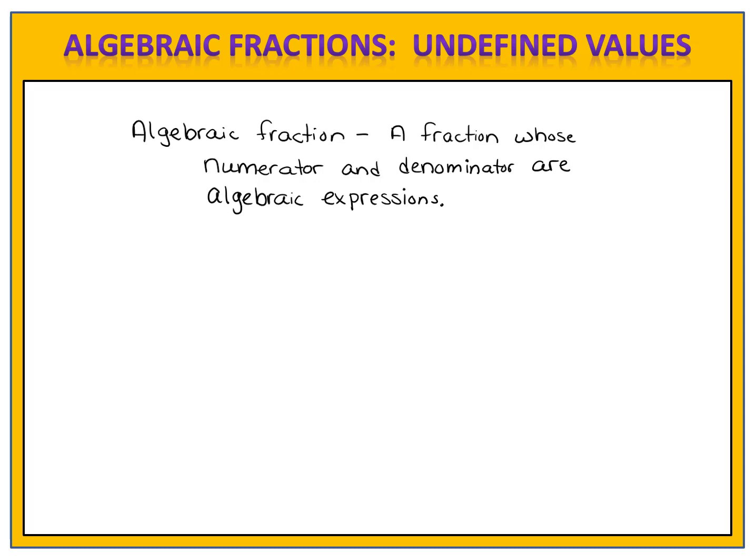What does that mean? Let's look at a few examples. Here's an algebraic fraction: 3x plus 5 divided by x minus 2. Notice that we have algebraic expressions — expressions involving variables — in the numerator and the denominator. Here's another example: 7 divided by x squared plus 2x minus 63. Notice that the denominator is a polynomial. One more example: 3 divided by x — certainly much simpler, but also an algebraic fraction.